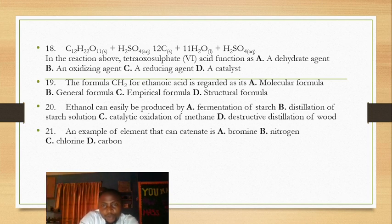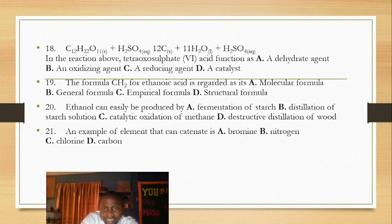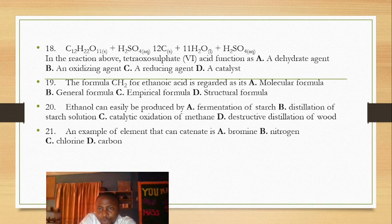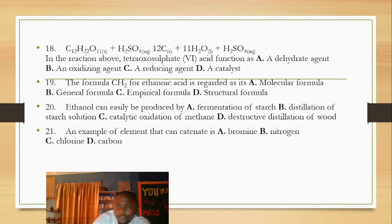The empirical formula may have a permitted mistake in the question. Question 20: ethanol can easily be produced — this is how ogogoro is made — by fermentation of starch. That's the answer.